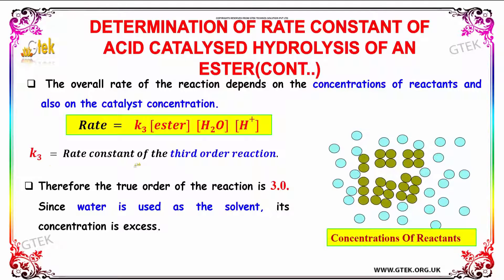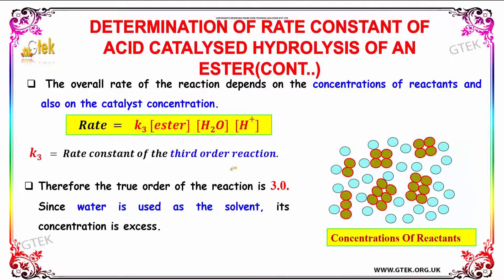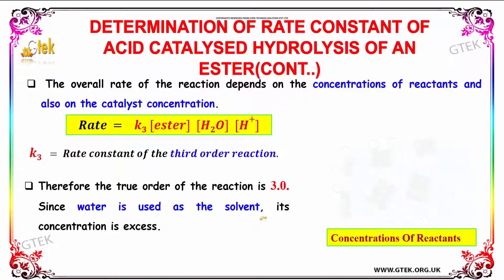Where K3 is the rate constant of the third-order reaction. Therefore, the true order of the reaction is 3.0. Since water is used as a solvent, its concentration is in excess.